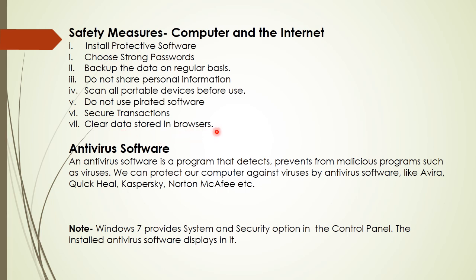Antivirus software is a program that detects and prevents malicious programs such as viruses. We can protect our computer against viruses using antivirus software like Avira, Quick Heal, Norton, McAfee, etc. If you have Windows 7 operating system, it provides inbuilt security options in the Control Panel.